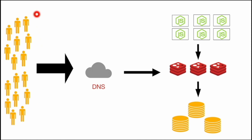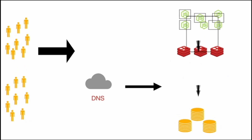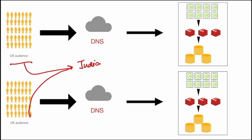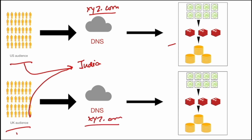Earlier we were getting traffic only from India, but now our application has grown and is attracting users from different geographies. We are now getting traffic from the US and UK as well. If our application servers are in India and US/UK users are connecting to the India server, they will face significant latency problems. To solve this, we deploy servers in US and UK locations and manage DNS-level load balancing — US users are redirected to the US-hosted application server, and UK users are redirected to the UK-hosted application servers.